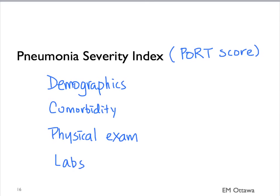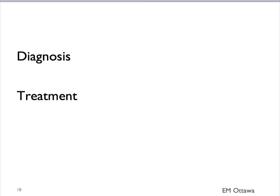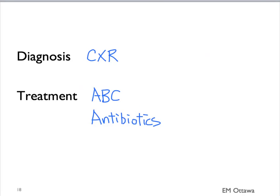Similar to the CURB-65 score, the higher the number, the higher the 30-day mortality. We won't go through each item here, but I'll refer you to the blog for additional resources on this tool. In summary, we discussed the diagnosis and treatment of pneumonia. The diagnosis hinges on a chest x-ray. For treatment, we always start with ABC. Once stabilized, we give antibiotics, with the choice depending on the patient and the setting where they acquired their pneumonia. Lastly, two risk stratification tools — CURB-65 and the Pneumonia Severity Index — help us decide whether the patient can be treated as an outpatient or should be admitted. We hope you find this useful. Thank you for watching.